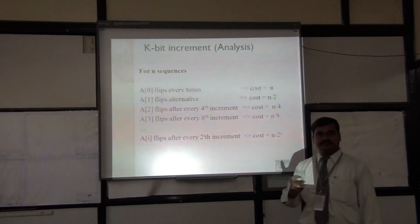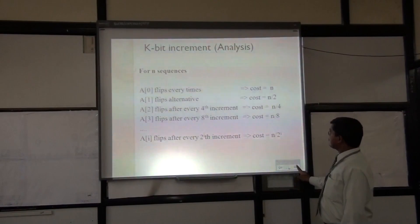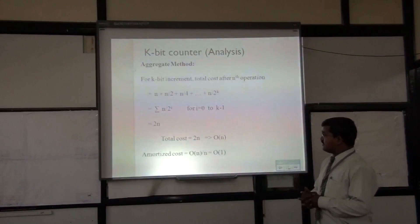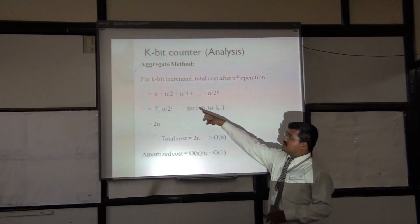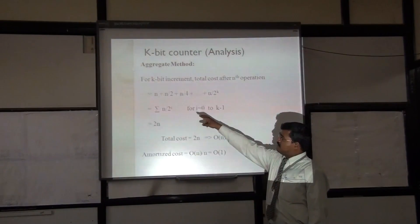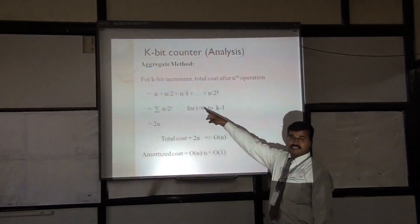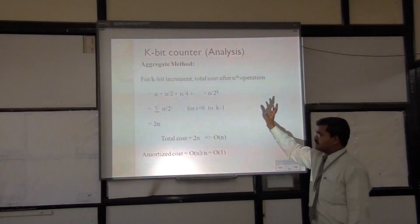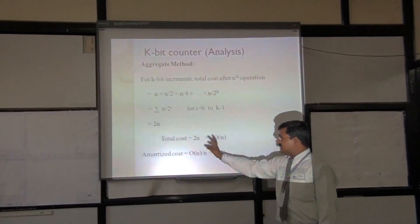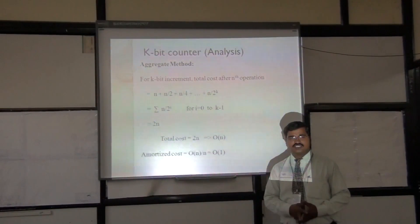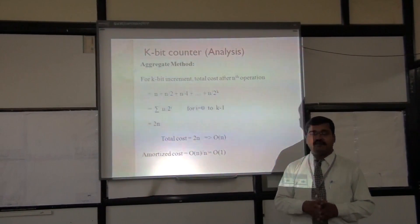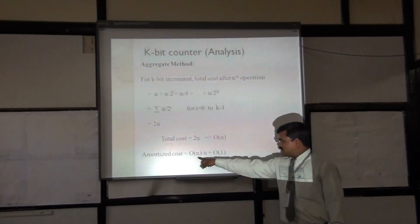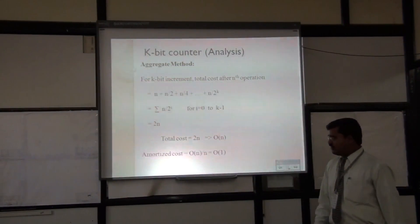If we calculate the total cost — the number of bit flips — it sums as: N (for the least significant bit) + N/2 + N/4 + ... + N/2^k, which totals to 2N. So the total cost incurred is 2N, which is O(N). Therefore the average amortized cost per operation is O(N)/N = O(1). This is how the aggregate method calculates: total cost divided by number of operations gives O(1).